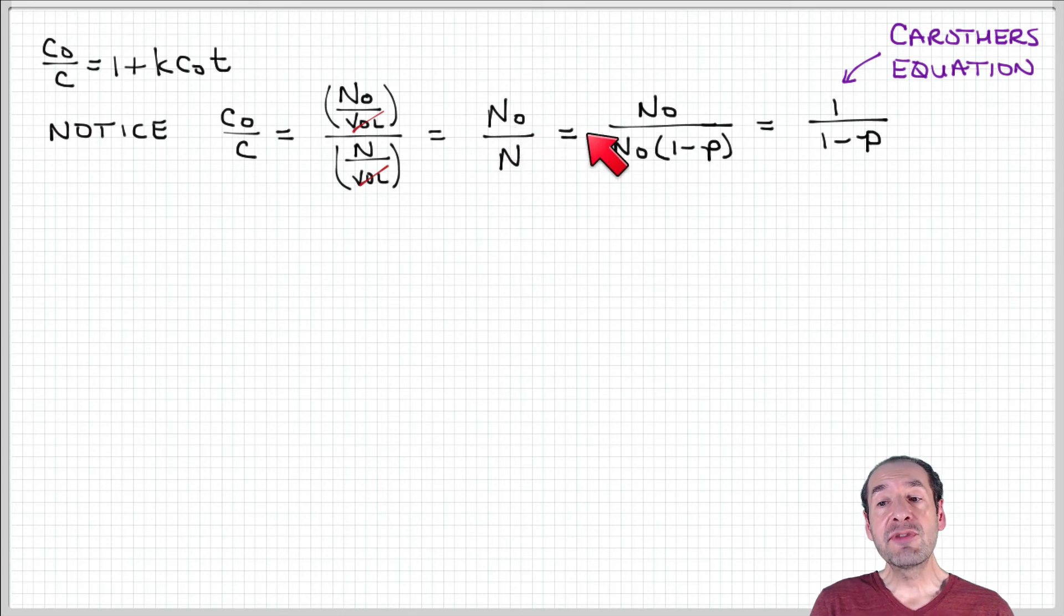I have expressions for these. The initial number of molecules N naught and the number of molecules present at some time that are unreacted equals N naught times the probability that a reaction has not occurred yet. This equals 1 over 1 minus P. You might recognize this as the Carruthers equation we already talked about.